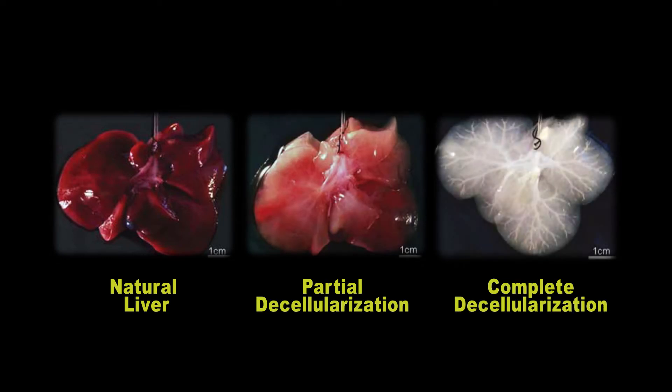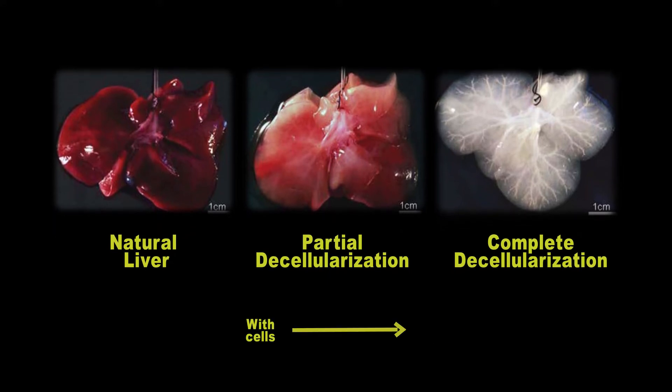The defining feature of these organs is the lack of cells which distinguishes them from natural organs and we can make them in the lab. Let me explain.